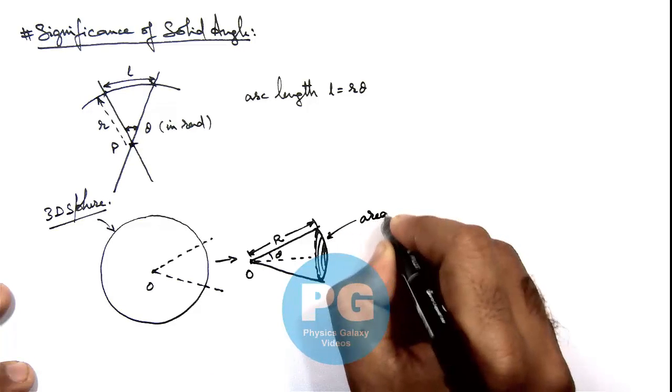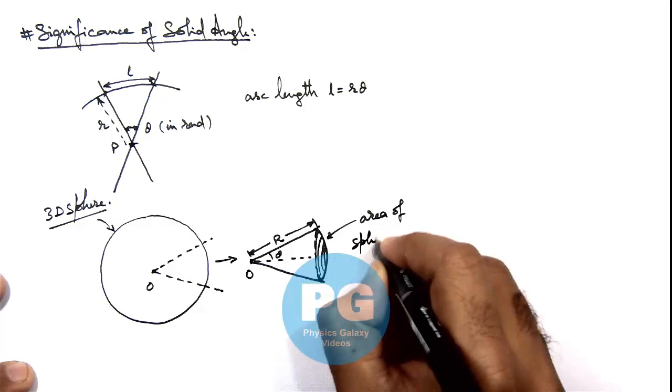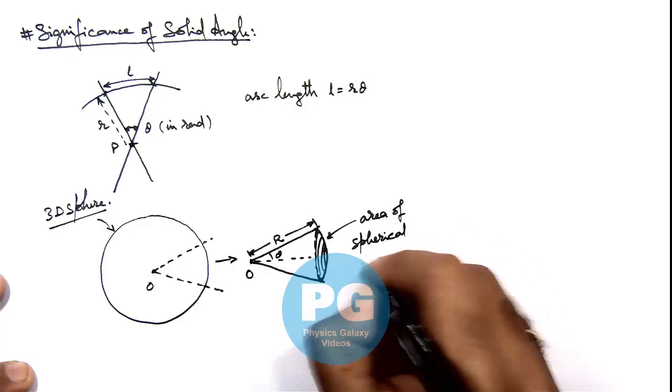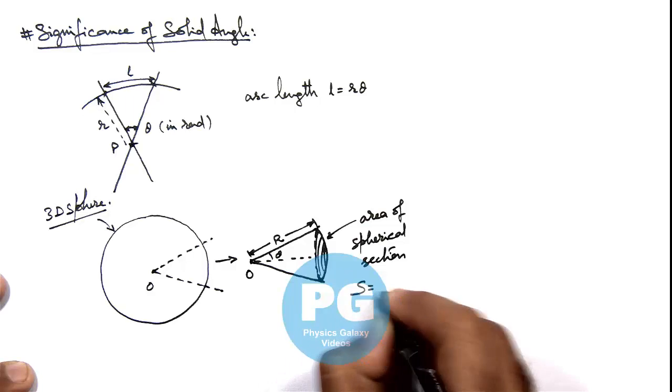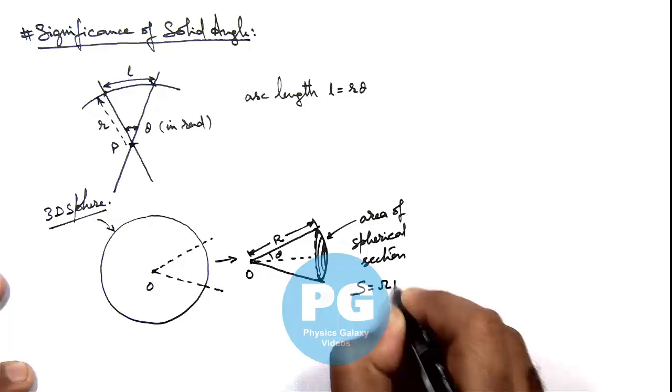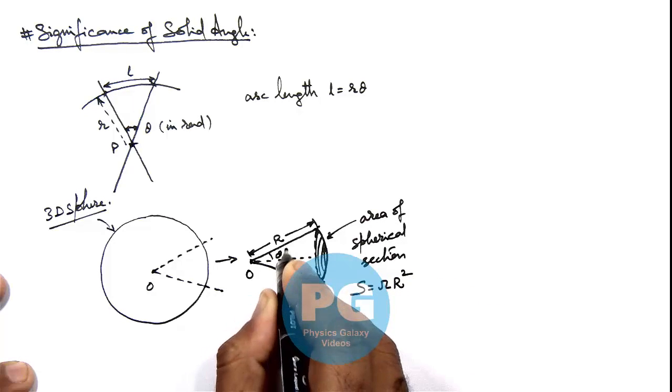But if we talk about the area of this spherical section, then this area s, we simply call as omega r square, where omega is the solid angle.